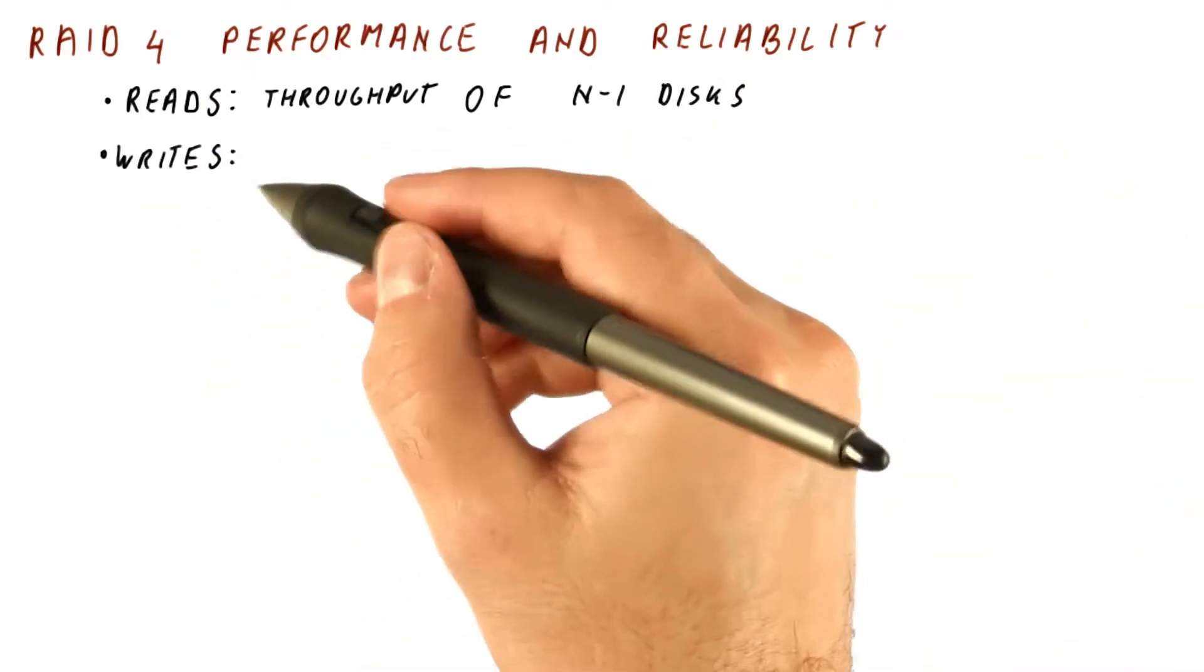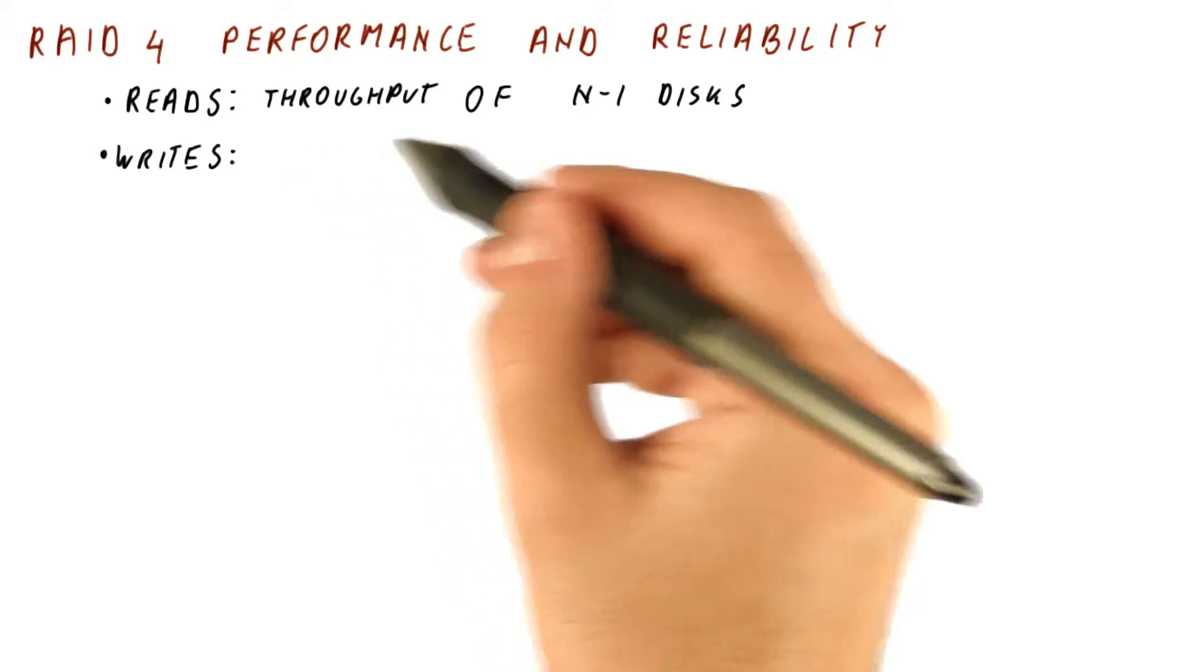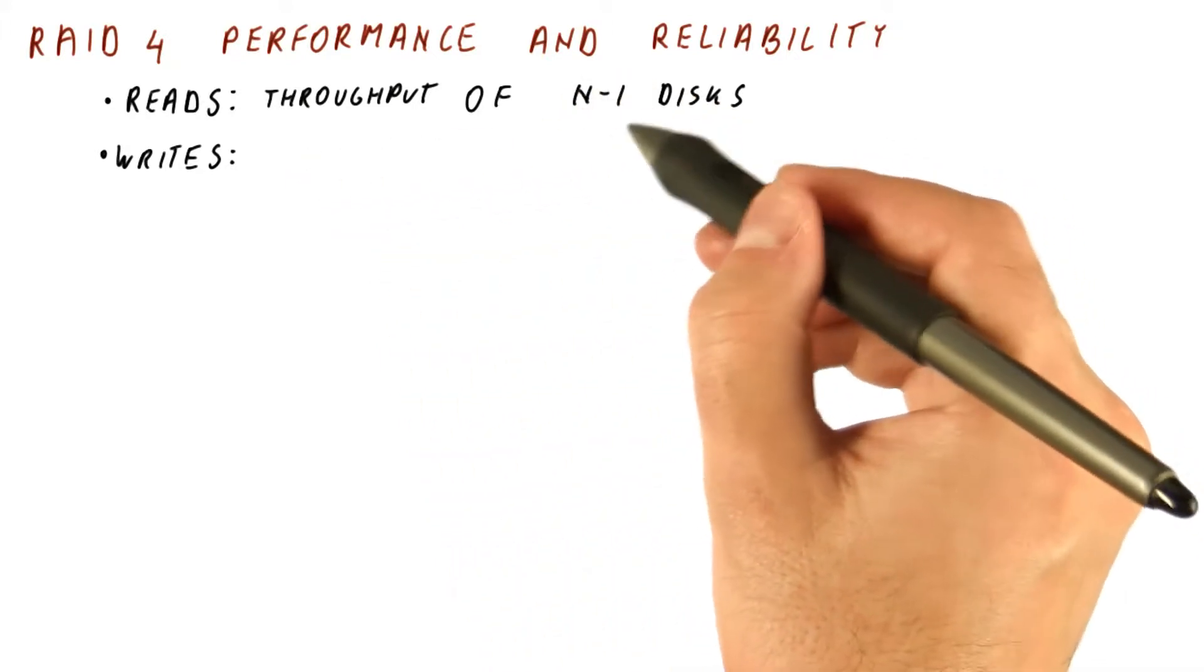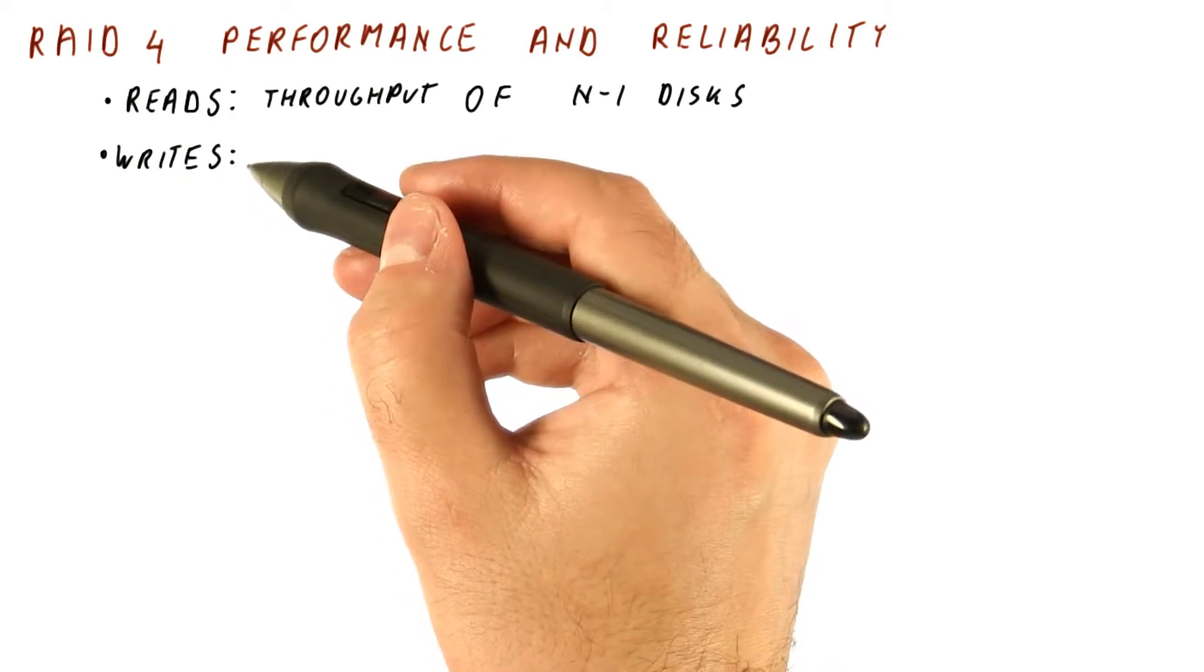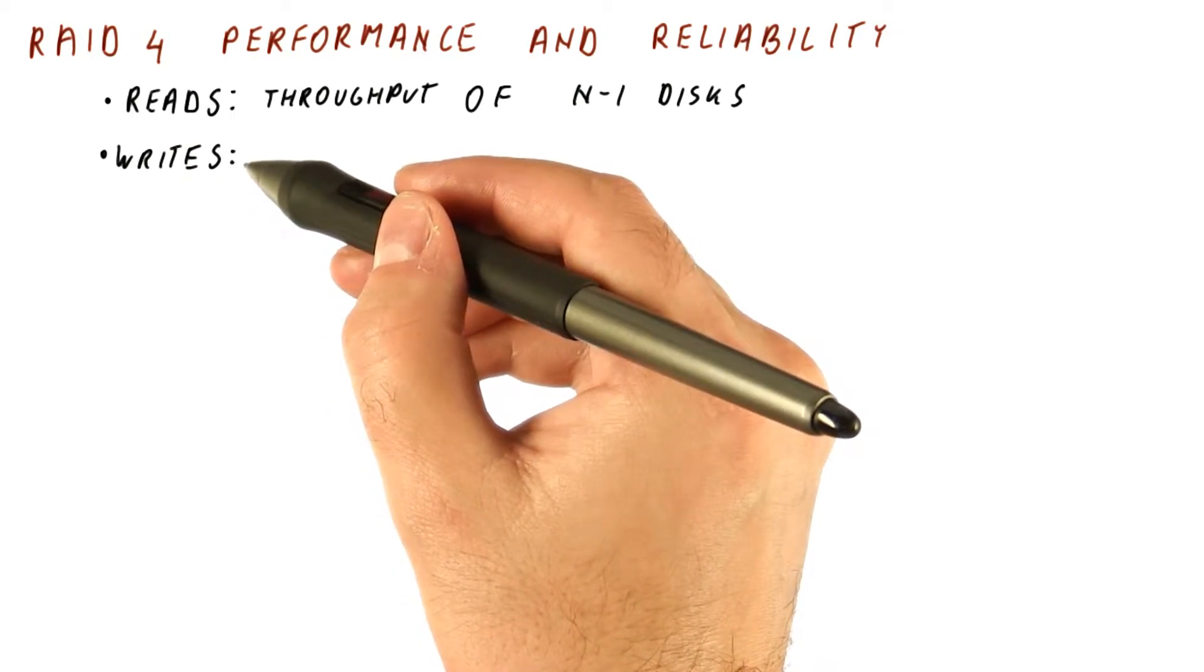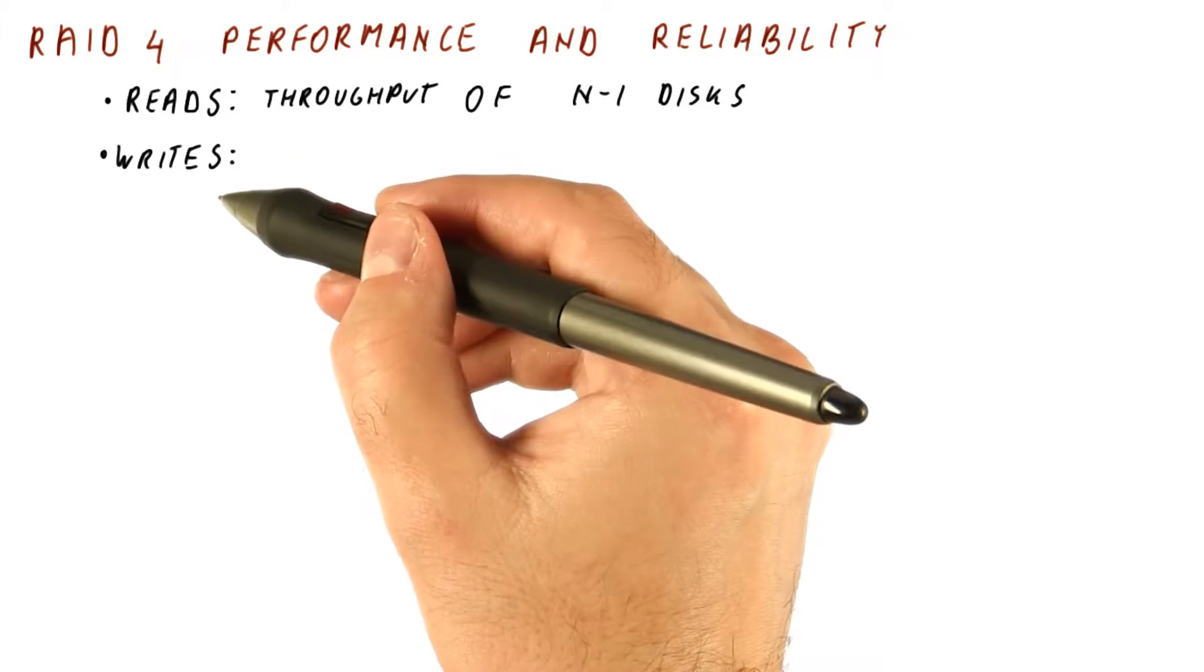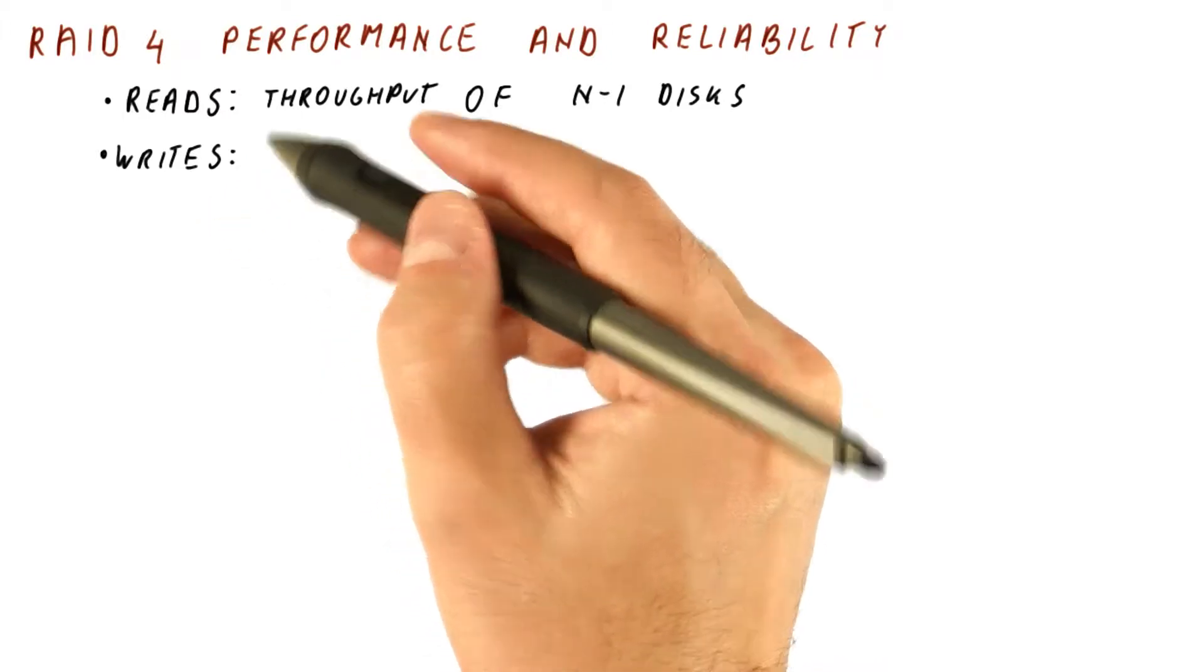For writes, however, the data accesses are distributed among the data disks. However, every write requires the parity disk to read and then write. We need to read the old parity, update it, and then write it back.